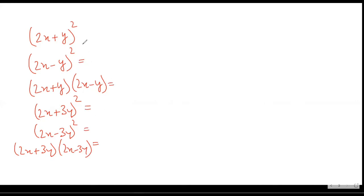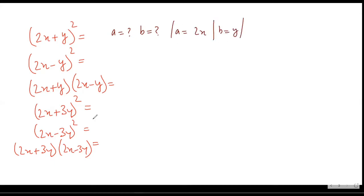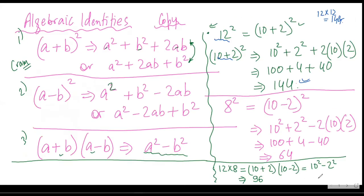What I suggest is: whenever you start these kinds of questions, what you need to identify first is what is my a and what is my b. So for example, in the first question your a is 2x and your b is y, then you use the formula. In this question your a is 2x and your b is 3y. Once you have identified your a and b, only then start applying these identities.